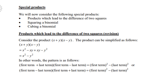Special products — we will now consider the following: products which lead to the difference of two squares, squaring a binomial, and cubing a binomial. Consider the product (x + y)(x − y).